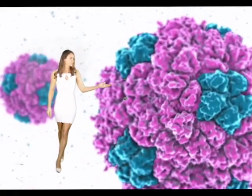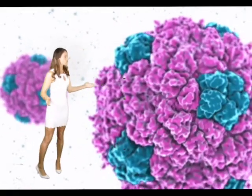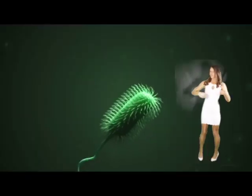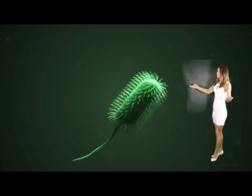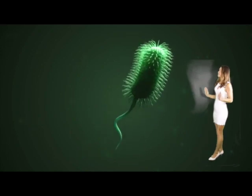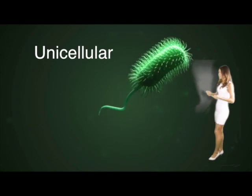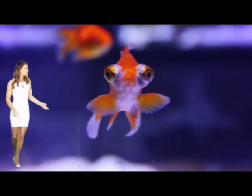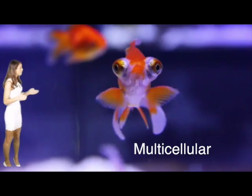The individual cell is the unit structure of all living things. An entire organism may consist of one cell, which is called unicellular, or many cells, which is called multicellular.